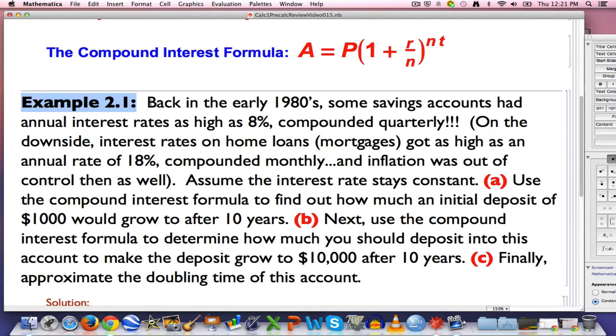A little history to start off with. Back in the early 80s when I was young, some savings accounts, if you can believe it, had annual interest rates as high as 8% compounded quarterly. I had such a savings account, though the interest rate didn't stay constant at 8%. We are going to pretend it stays constant here. There was a downside to life back then. Interest rates on home loans, mortgages, got as high as 18%, if you can believe it, compounded monthly. So that was a downside. Another thing was that inflation was kind of out of control mid-70s through early 80s. The prices were going up of lots of things. Another way to look at that is the value of the dollar was going down very rapidly.